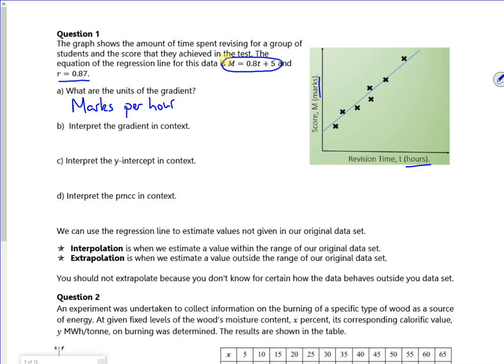Interpret the gradient in context. Right, so the idea, the gradient is 0.8. So for every hour you spend revising, your mark goes up by 0.8. So for every hour, it's actually one unit going across, an hour spent revising, a score increases by 0.8 marks.